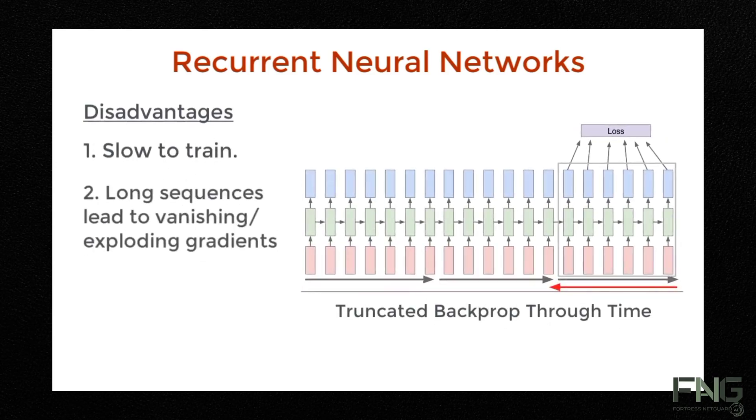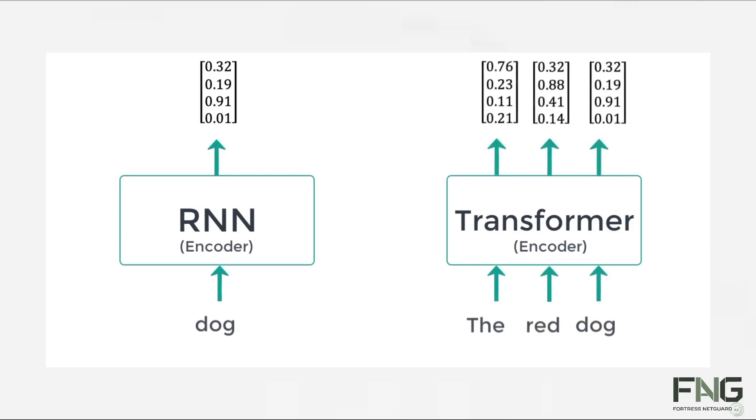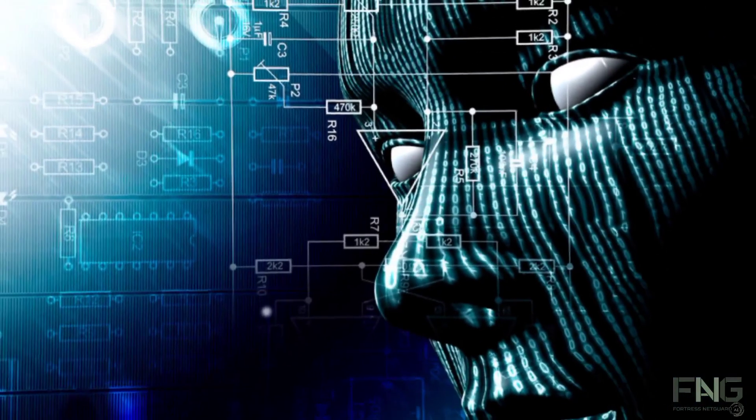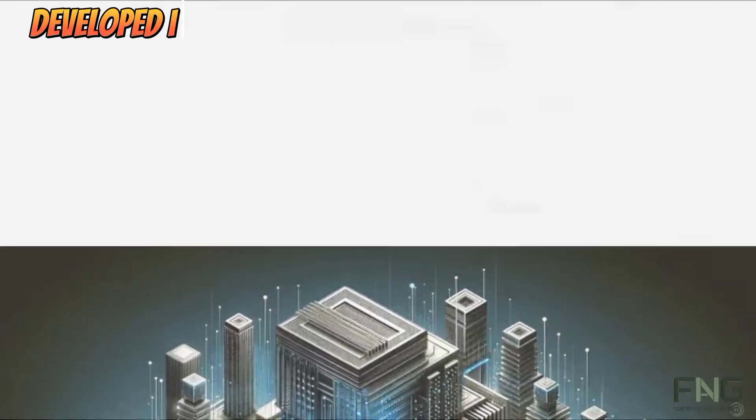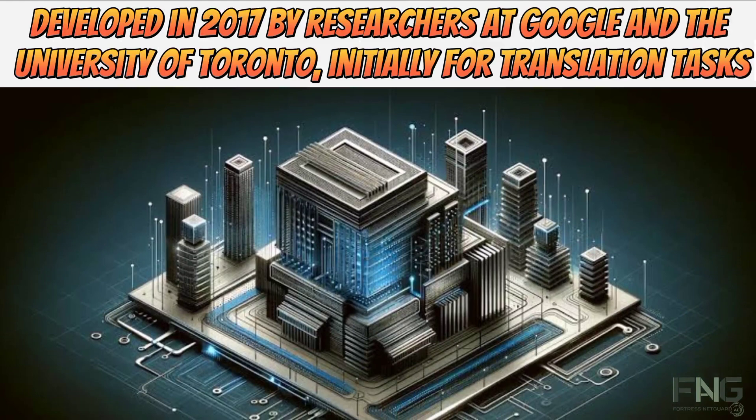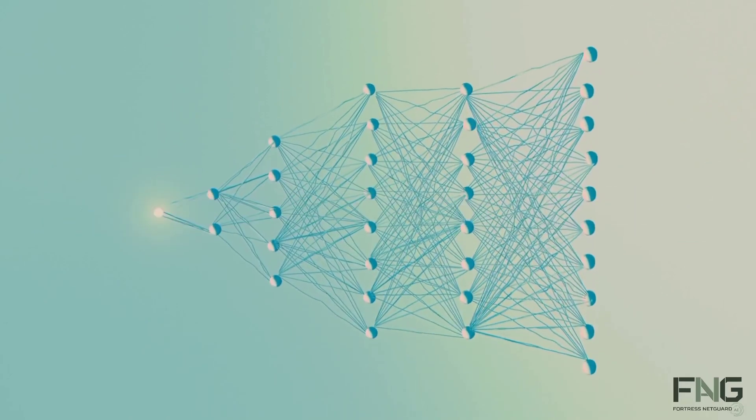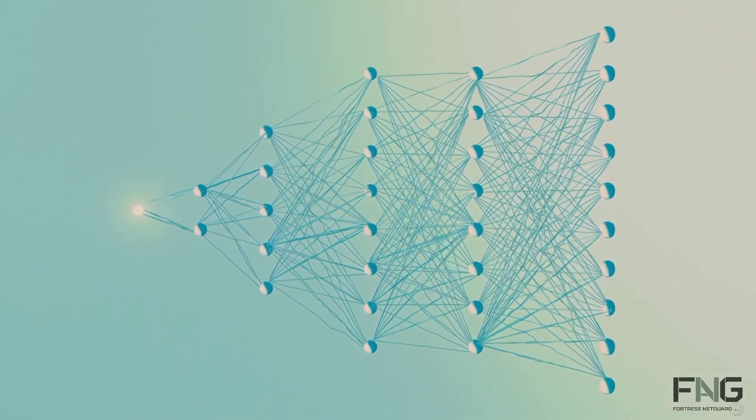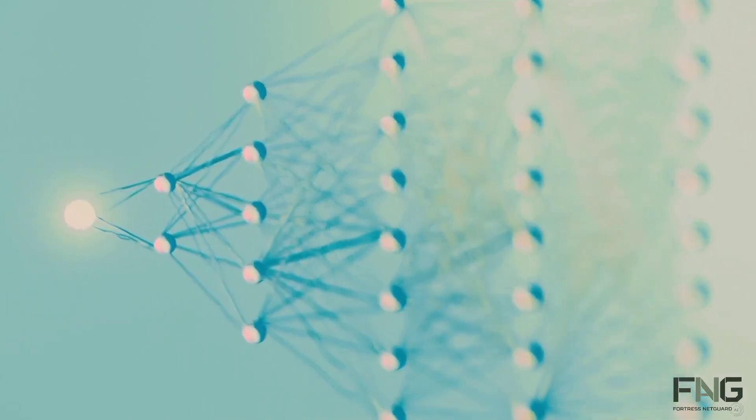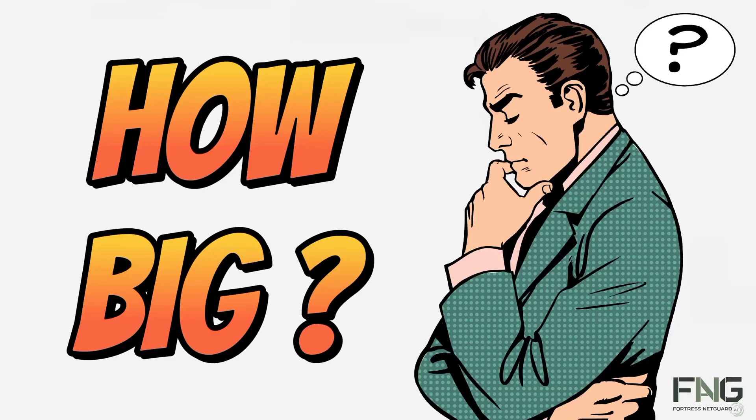Before transformers, recurrent neural networks (RNNs) were the primary model for textual tasks. However, RNNs faced limitations in handling large text sequences and were challenging to train efficiently. Unlike RNNs, transformers process text holistically, making them more effective in understanding and generating natural language. They represent a transformative breakthrough in machine learning developed in 2017 by researchers at Google and the University of Toronto, initially for translation tasks. But unlike recurrent neural networks, transformers could be efficiently parallelized.